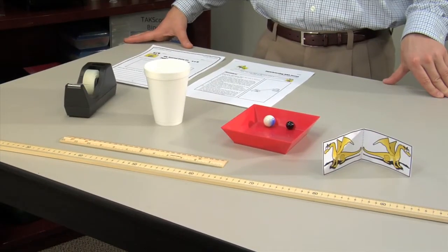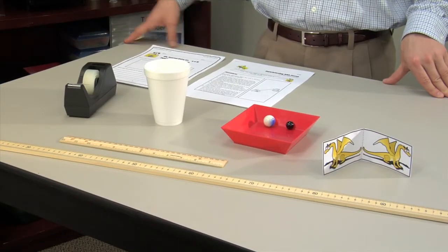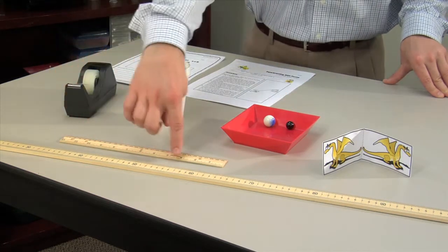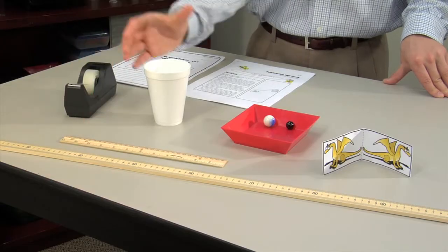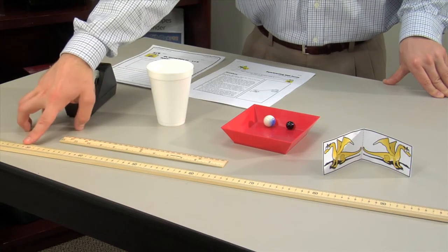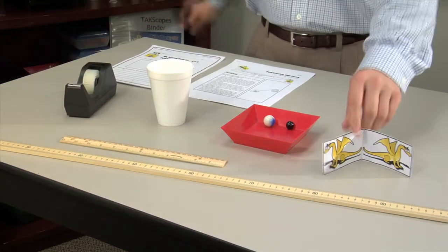Prepare the following items in advance for each group in your class: two marbles, one small and one large, a ruler with a groove down the middle, a styrofoam cup, tape, a meter stick or measuring tape, and a paper dragon cutout.